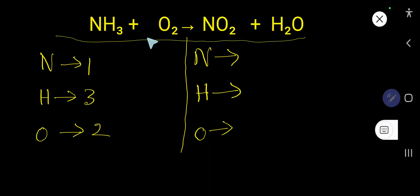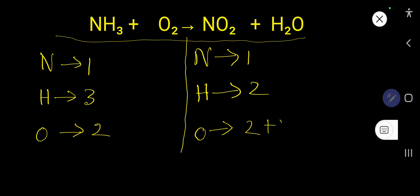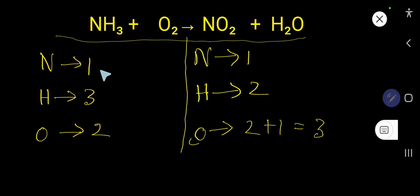How to balance NH₃ plus O₂ to produce NO₂ plus H₂O. On the right-hand side, the number of nitrogen is one, the number of oxygen is two, the number of hydrogen is two, and the number of oxygen here is one — so basically we have three oxygen. We'll target that atom first that is present in only one compound. Oxygen is present in two compounds, so we'll balance oxygen last. Nitrogen: one on each side. Hydrogen: three on the left, two on the right.